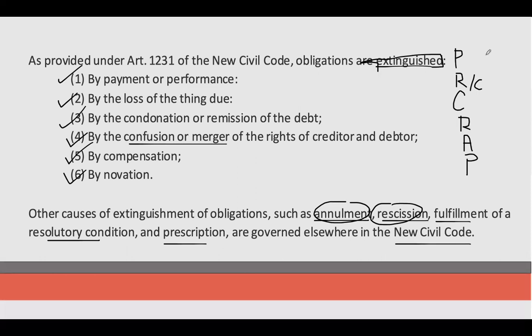So PR — M N L F A A. So you have M, which is Merger or Confusion.